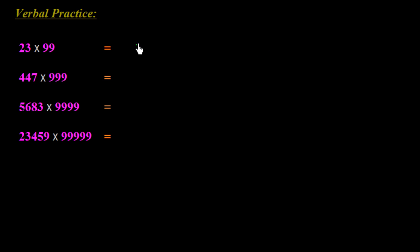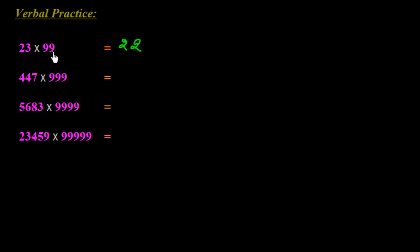Now let's do some verbal practice. We have to multiply 23 with 99. One less than 23 is 22, so we write 22 on the left side. Subtract 22 from 99: 9 minus 2 is 7, and 9 minus 2 is 7. So the answer is 2277.